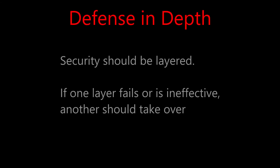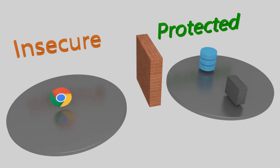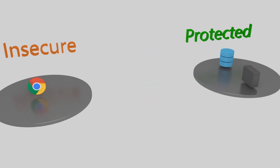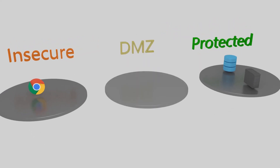What can we do about this? We've talked about the defense in depth principle before. In short, this principle states that security should be layered, so if one layer fails or is ineffective, another layer can mount a defense. A DMZ, also known as a perimeter network, is a shining example of this.